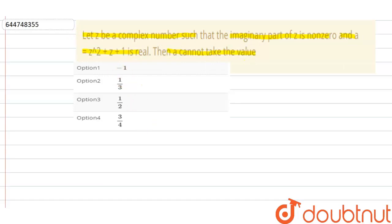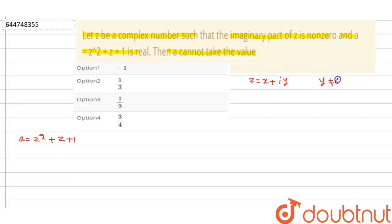Since a is equal to z squared plus z plus one, and this is a real term, assume that z is equal to x plus iota y, where y does not equal zero. So z squared can be written as x squared minus y squared plus iota 2xy.